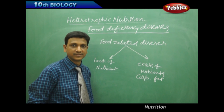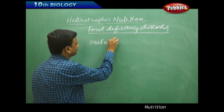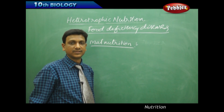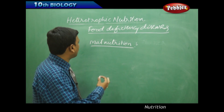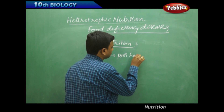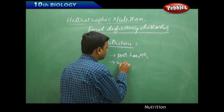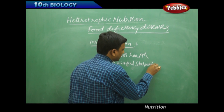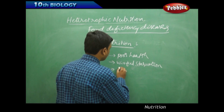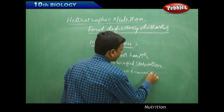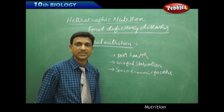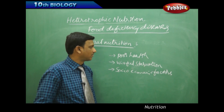Now let us see some reasons of malnutrition. Malnutrition means having food that does not contain any one of the important nutrients. This malnutrition is caused by different reasons: poor health is one reason; willful starvation, where some people do not want to take food because of various reasons, is another. Socio-economic factors such as poverty also contribute. And some people are beauty-conscious and therefore avoid certain foods.